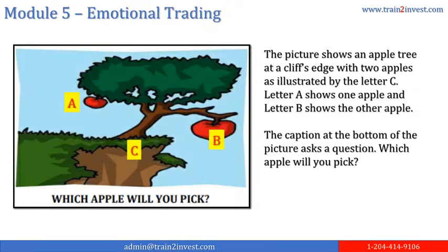Emotional Trading. The picture shows an apple tree at a cliff's edge with two apples illustrated by letter C. Letter A shows one apple and letter B shows the other apple. The caption at the bottom of the picture asks: which apple will you pick? Assuming that you and your spouse were asked this question, the answers will provide a guide to your risk tolerance. For example, let's assume the wife is somewhat cautious — a GIC queen — and the husband is somewhat a risk taker. She would pick apple A and he would pick apple B. Who is correct? The answer is both of them, because they have different risk profiles.